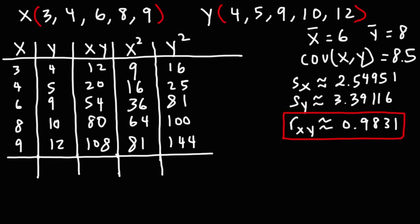Now we find the sum of each column. The sum of x is 30, the sum of y is 40, the sum of xy is 12 plus 20 plus 54 plus 80 plus 108, which equals 274. The sum of x squared is 9 plus 16 plus 36 plus 64 plus 81, which equals 206. The sum of y squared is 16 plus 25 plus 81 plus 100 plus 144, which equals 366.